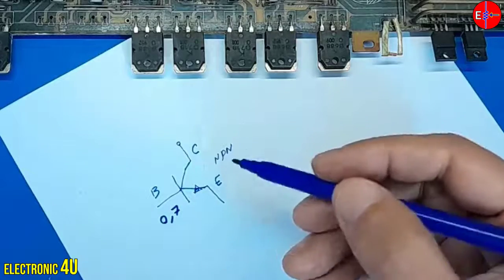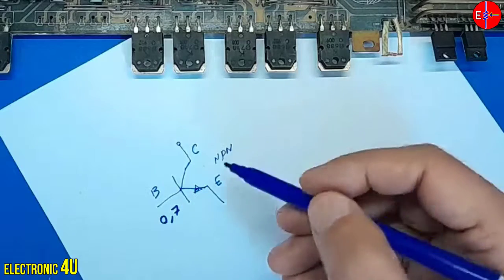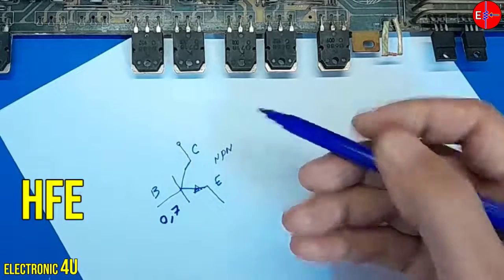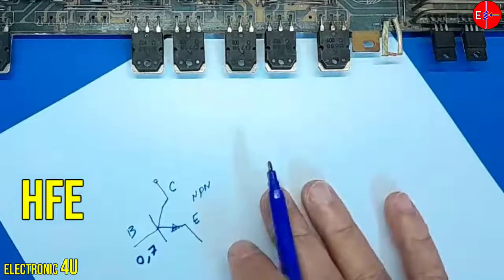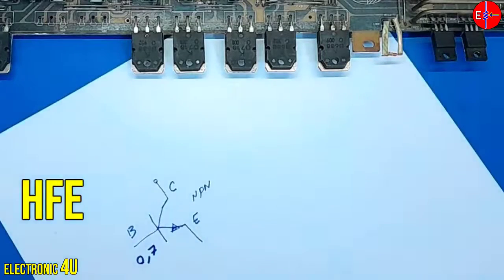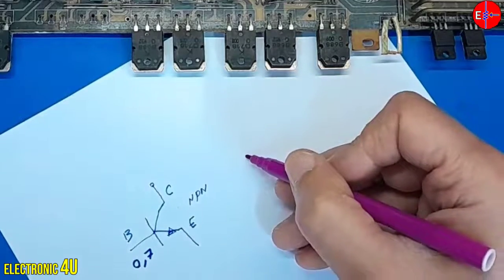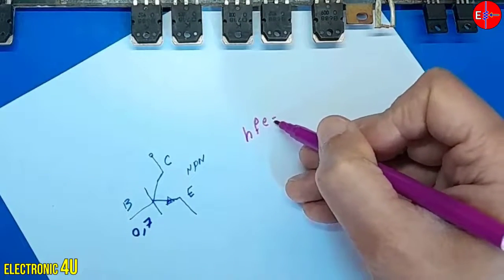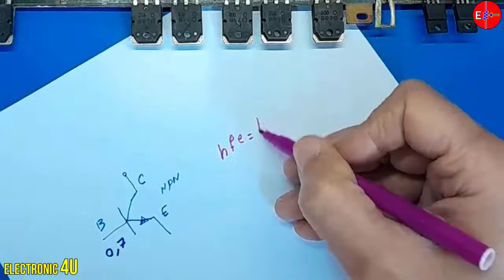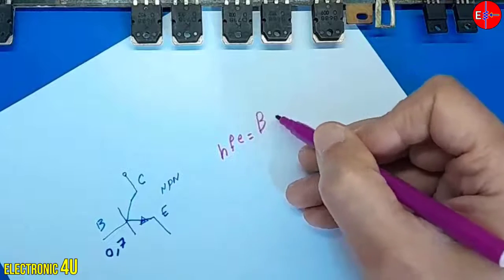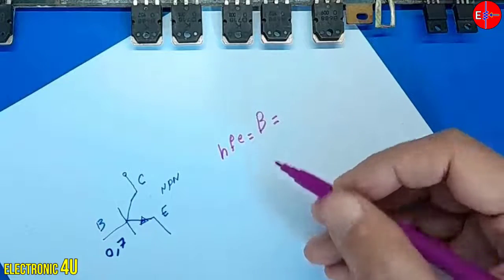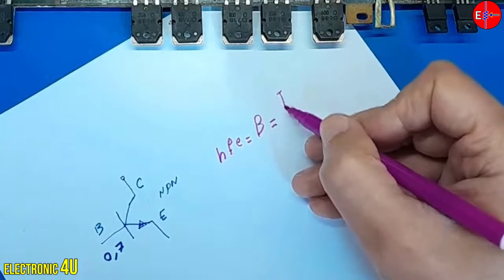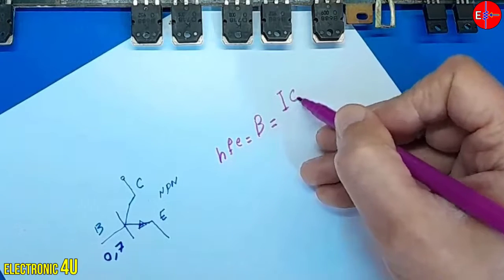We know that the ratio of collector current to base current is called gain or HFE. The value of HFE is included in the datasheet of the part. Therefore, the gain is equal to the collector current divided by the base current.